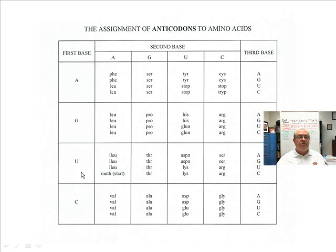Well the first bases are down the left side. Here's the first base A. Second bases are across the top. There's second base A, and so those intersect and we're in this box right here. And where are the third bases? They're down the right side, and each row has its little set of A's, G's, U's, and C's.